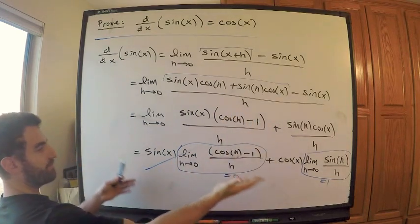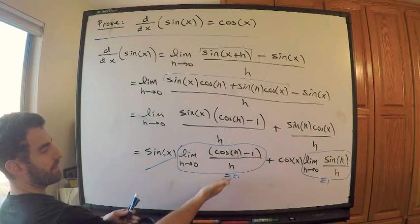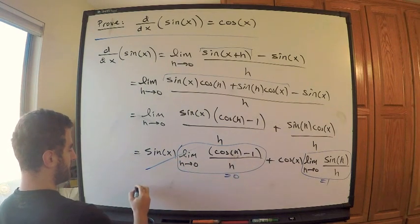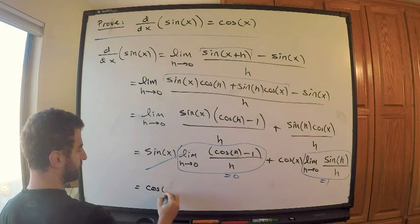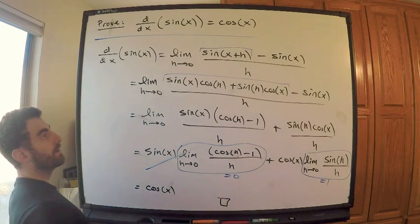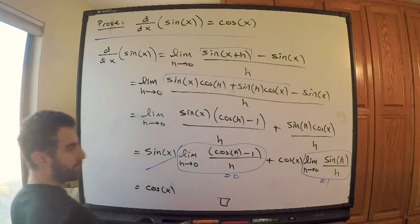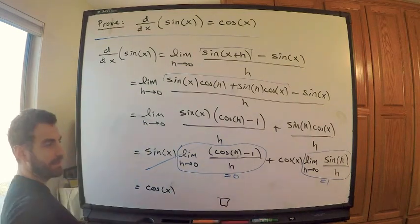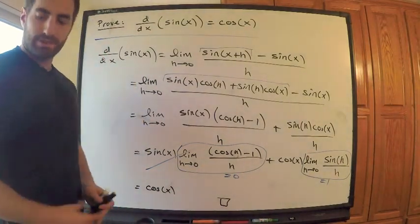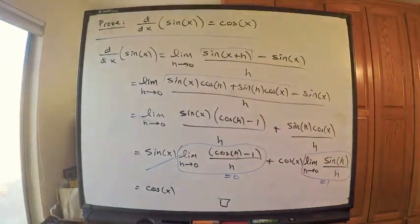So what am I left with? This whole first term is gone, and the second limit equals 1. So I have sine of x times 0, plus cosine x times 1. This is equal to cosine x. And I'm done. I'll make a video to prove why those special limits are true, but for now you know the derivative of sine x is cosine x. Enjoy, thank you!